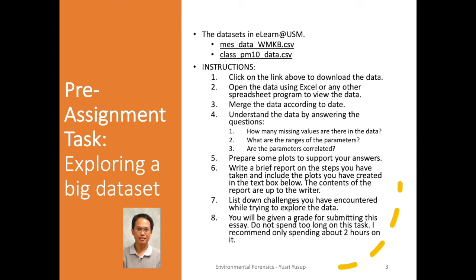Inside the report, you should also list down the challenges you encountered while trying to explore the dataset. For example, you could say it was difficult to merge the data, or you couldn't find any correlation, or there was too much missing data and you couldn't find the best way to average certain parameters so they link with the other parameter. Those are just some examples.